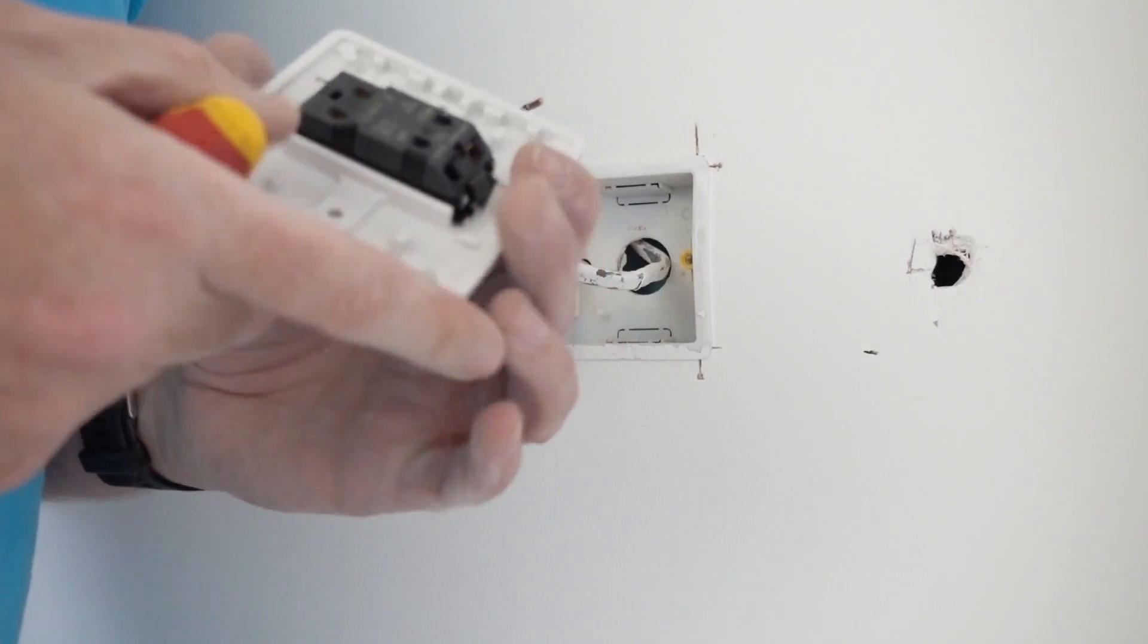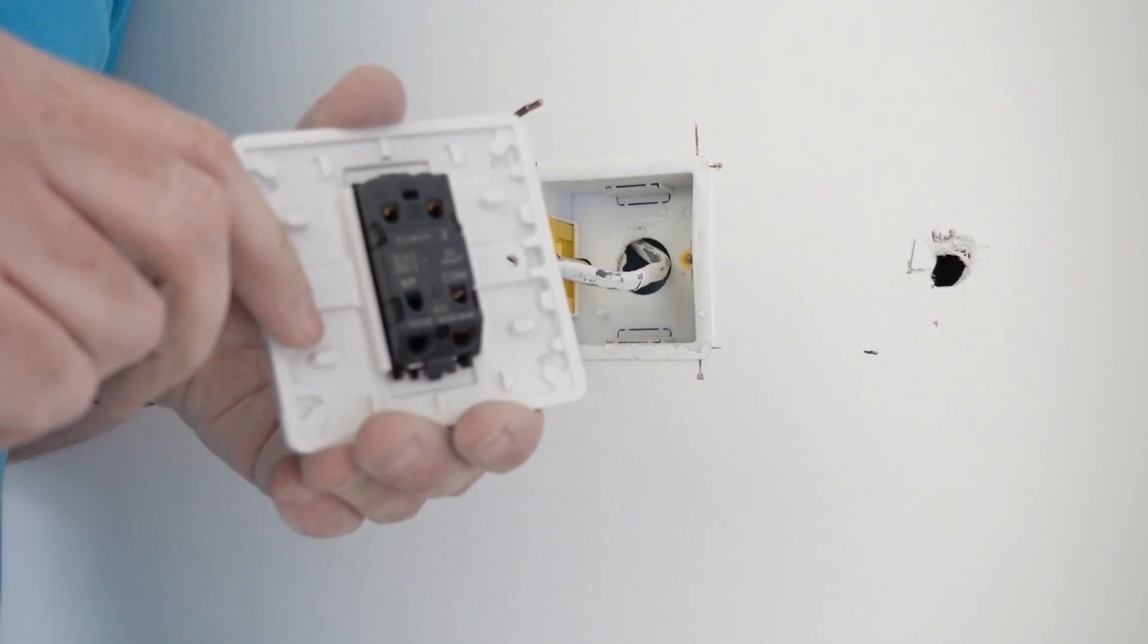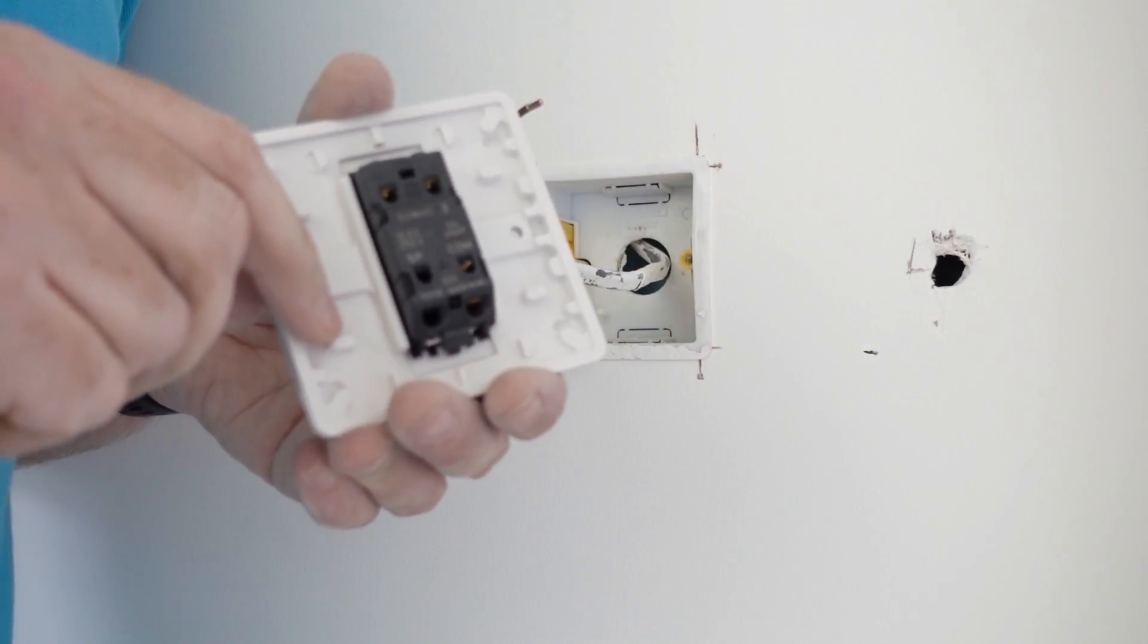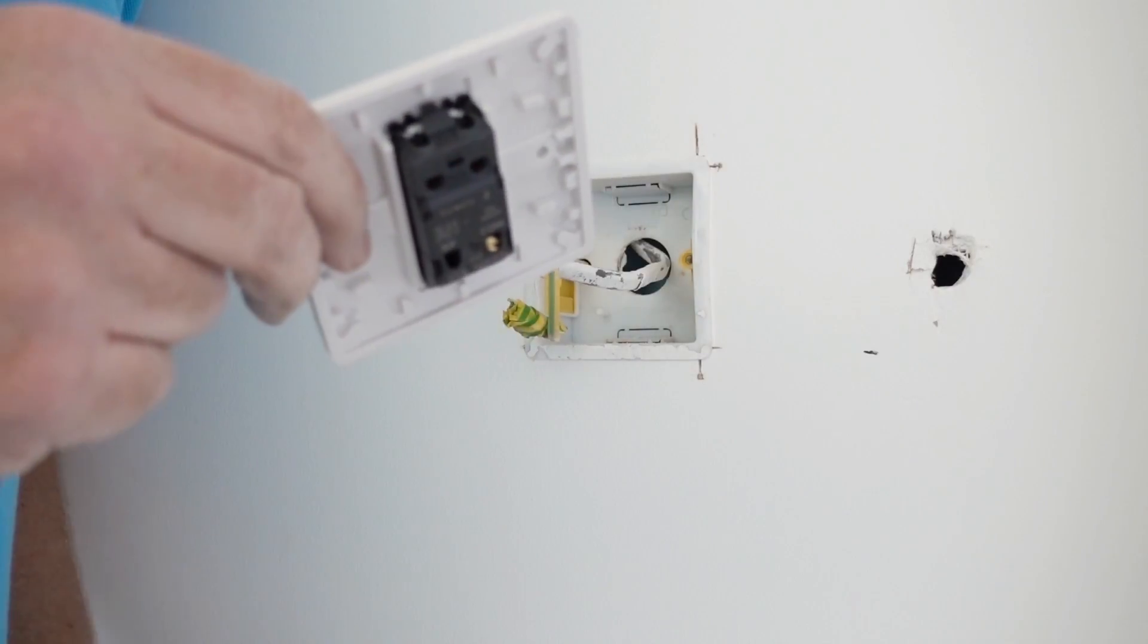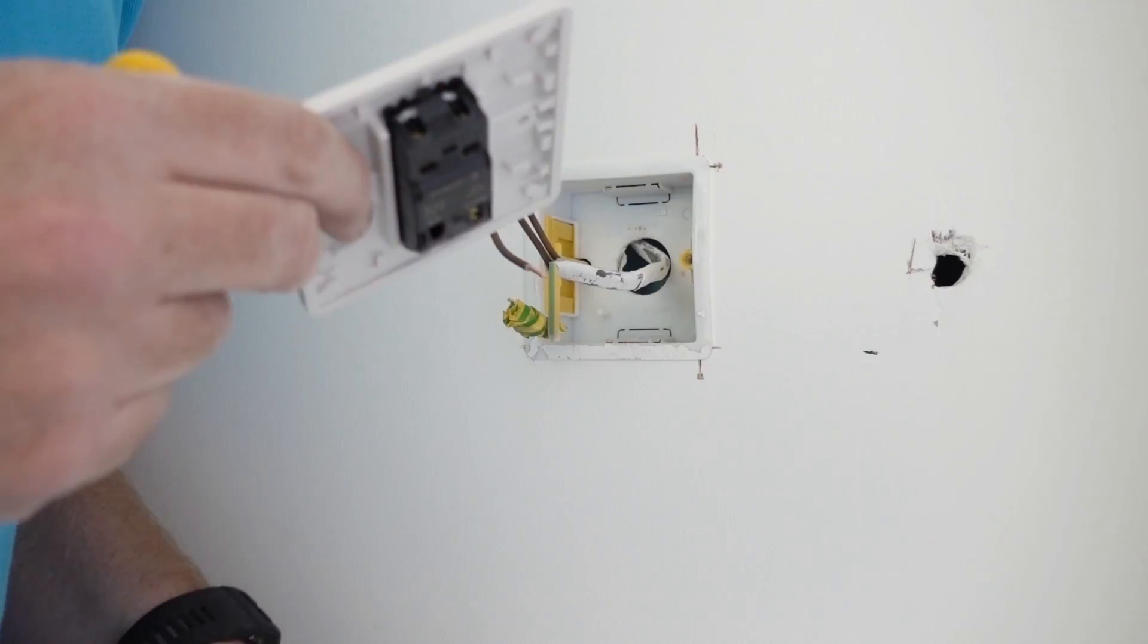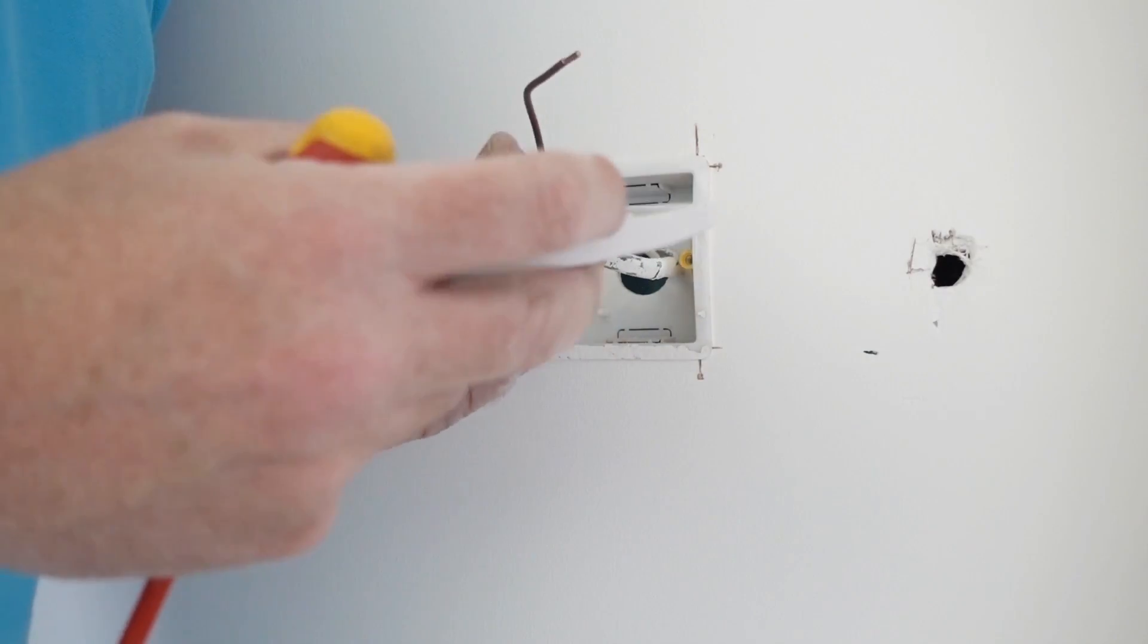And then to your light switch. Now this is actually a two-way light switch. I just buy two-way light switches. They're about 10 pence more than a one-way light switch. And then when I buy a box of these I can use them for one-ways or two-ways rather than having separate for each.